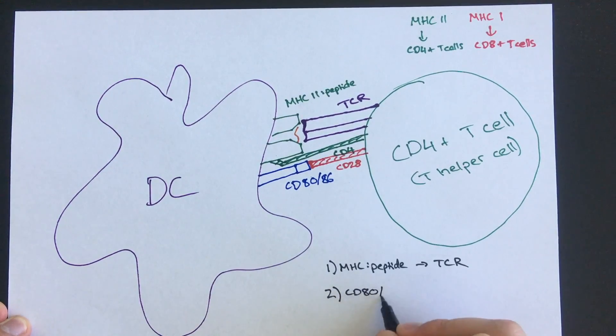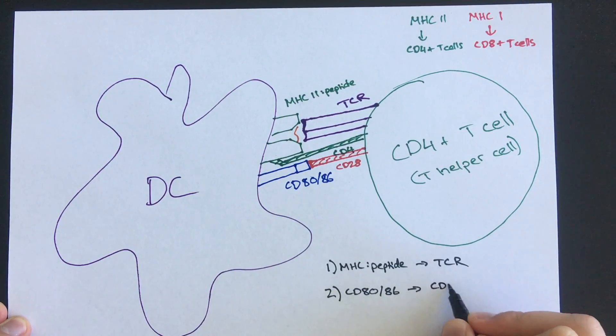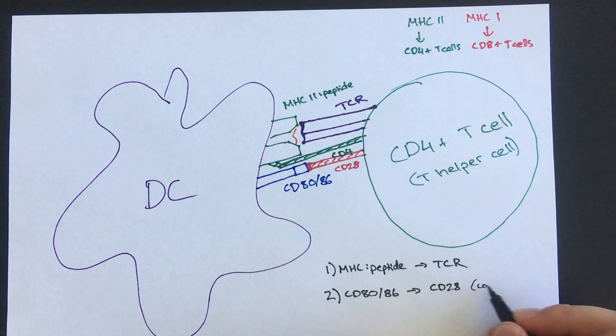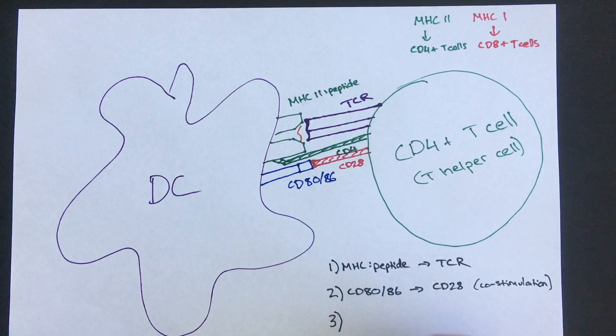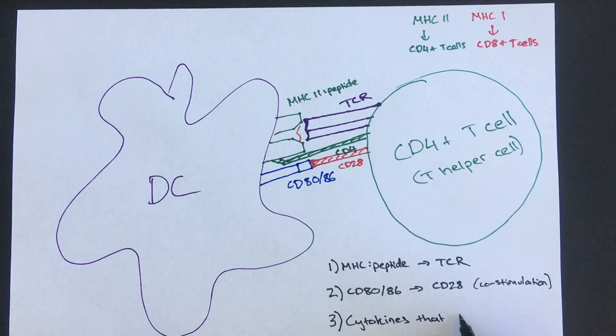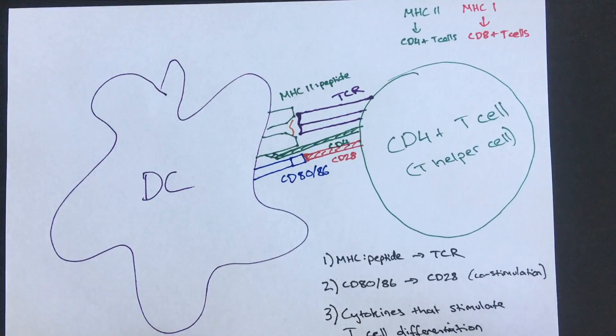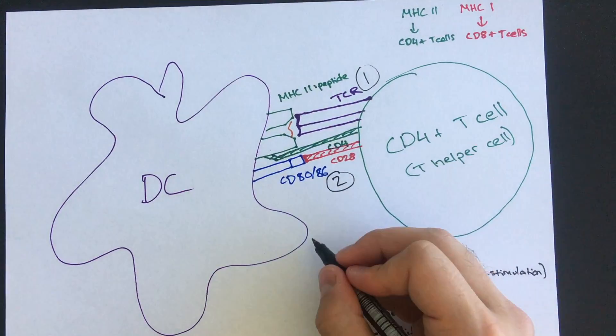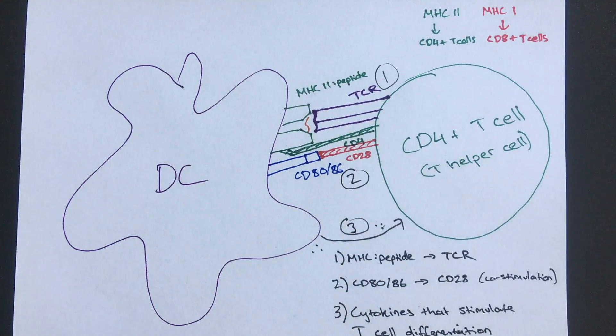The third signal are cytokines released by dendritic cells. These cytokines will induce the T helper cell to differentiate into the appropriate subclass, which will help shape the immune response to suit the invading microbe.